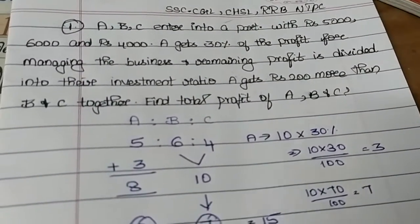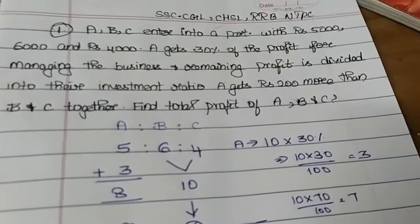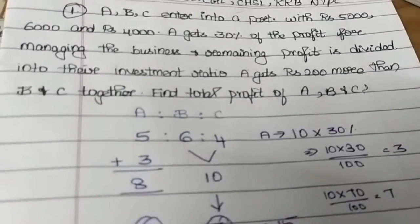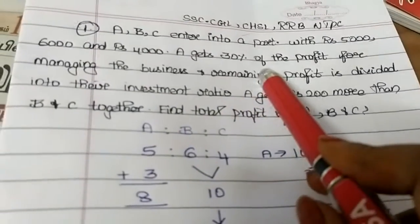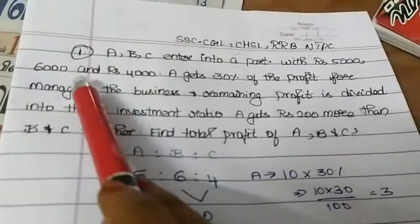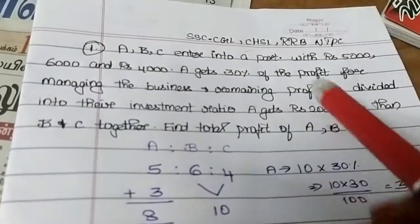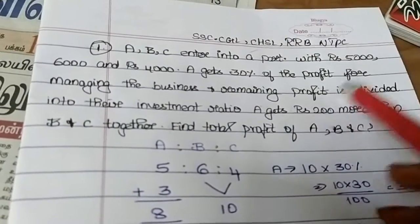Moderate level sum is in the ratio and proportion method. Within 30 seconds. ABC enter into a partnership with rupees 50,000, 60,000 and 40,000. A gets 30% of the profit for managing.